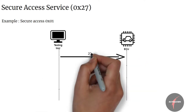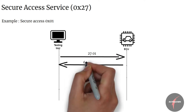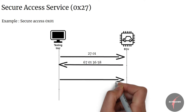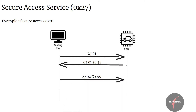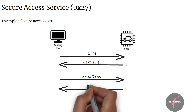The client sends 2701 seed request and the server responds 6701 3658. Here, 3658 are the seed values. The client would then compute the key based on the seed 3658 and send the key request 2702 C9A9. The server shall compare the key with its existing or computed key, provide the access, and respond with 6702.